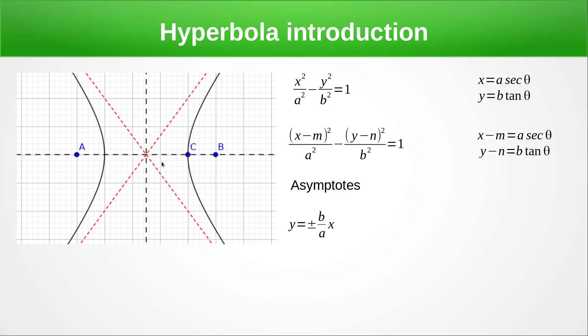And just like with ellipses, we have a connection between the b value, the a value and the foci c value, which is c squared equals a squared plus b squared. Make sure that you don't make the mistake of using the ellipse form.